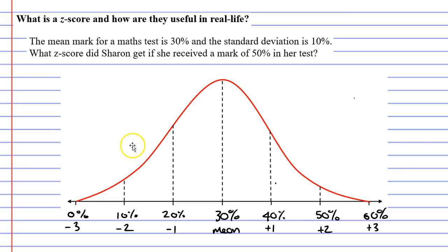negative 2, and negative 3. This is because when we get 20%, we subtract the standard deviation once, and then we subtract the standard deviation twice to get 10%, and we subtract it three times to get 0%.